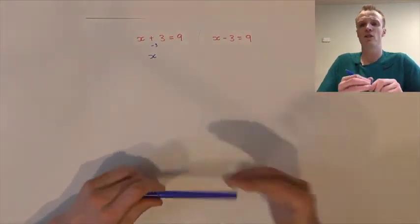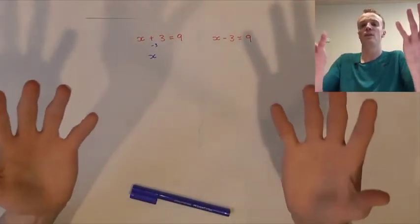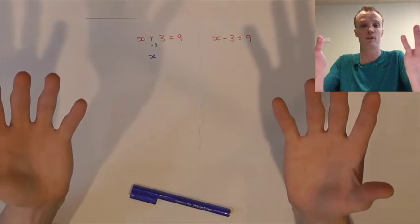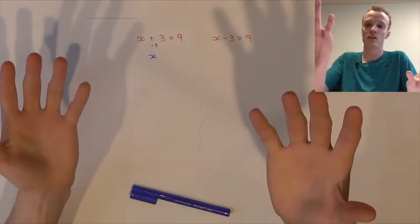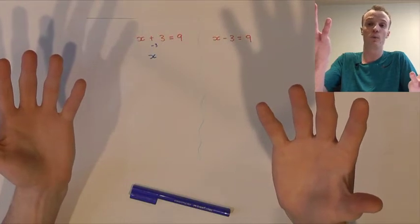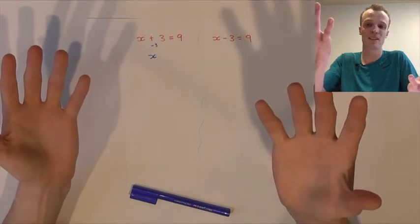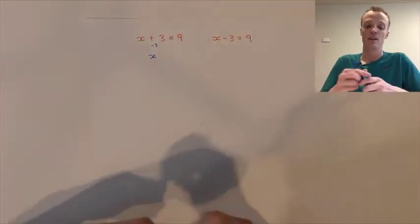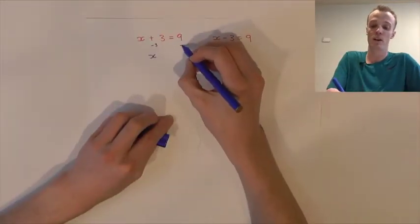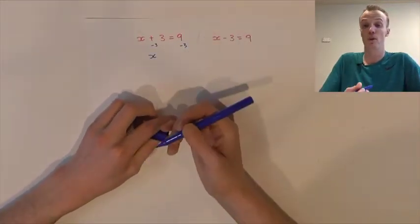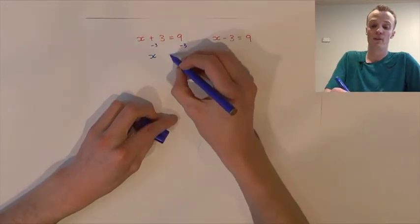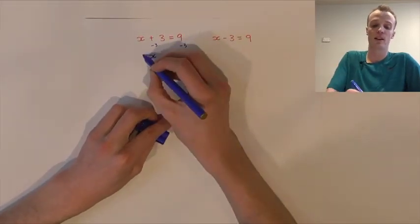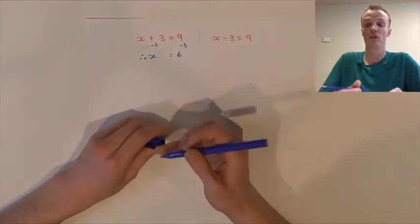However, these equations are like a set of scales — they balance at the moment. If we subtract 3 from one side, the scales are no longer going to balance. So whatever we do to one side, we must do to the other. So on the right-hand side we need to subtract 3 as well. 9 subtract 3 is 6, so our x value should equal 6.